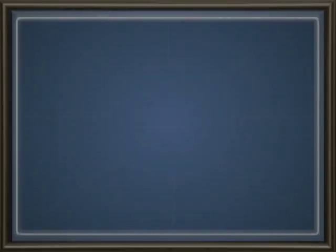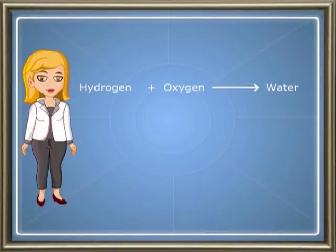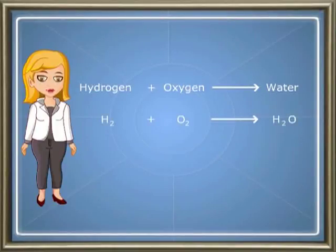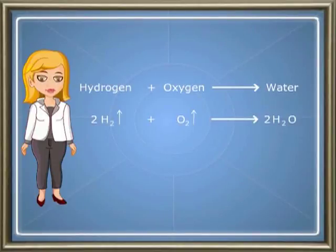Let us see another example on balanced equations. Hydrogen reacts with oxygen at a very high temperature to give rise to water. Write the unbalanced equation using symbols and formulae, then balance the chemical equation. Write an upward arrow beside hydrogen and also beside oxygen to indicate that both are gases.